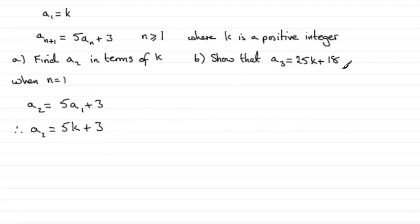Now this second part here is worth 2 marks. So let's just come down here now and we'll see if we can do it. Show that the third term in the sequence is 25k plus 18. So if we want the third term, we just set n equal to 2. So we've got a₂ plus 1, a₃ in other words.